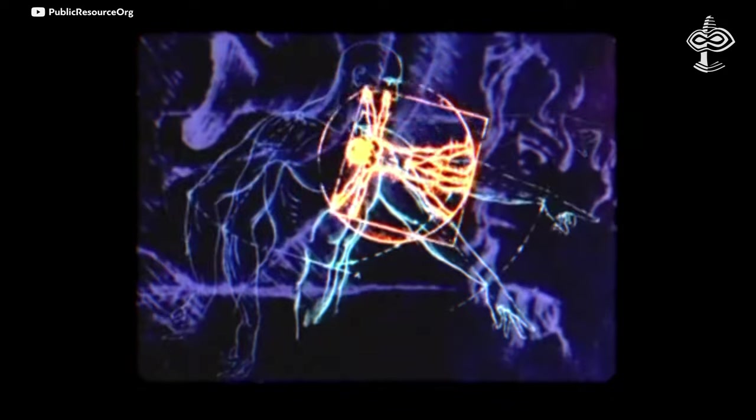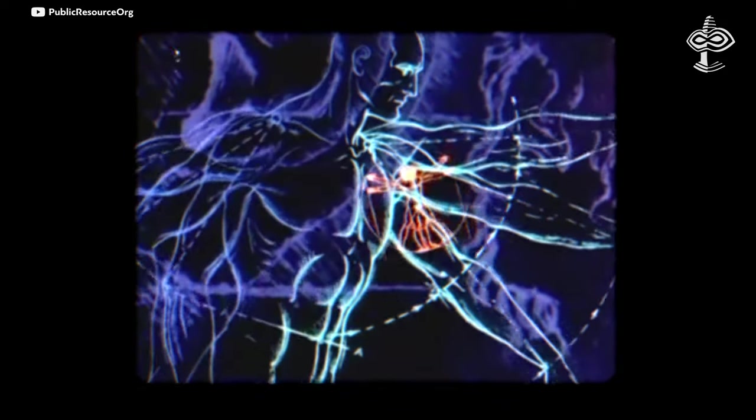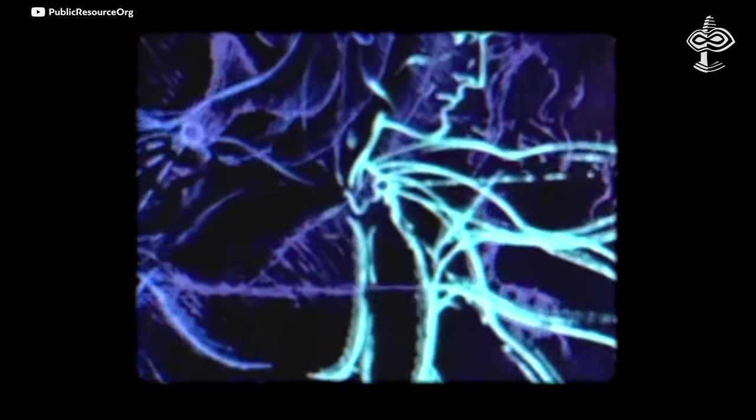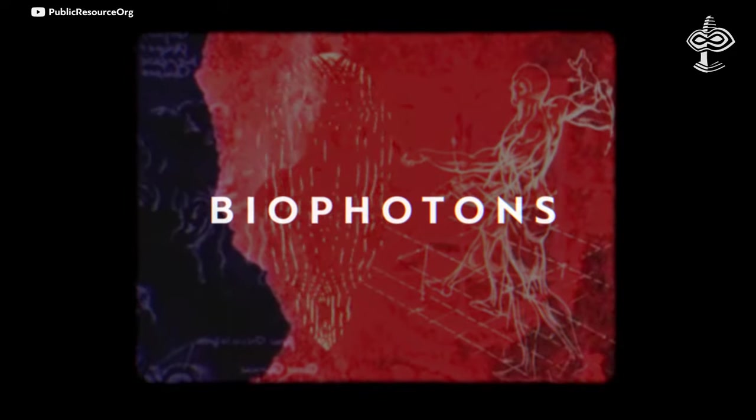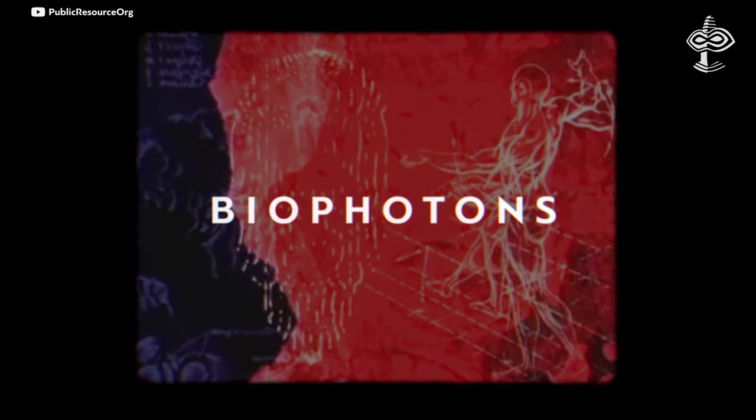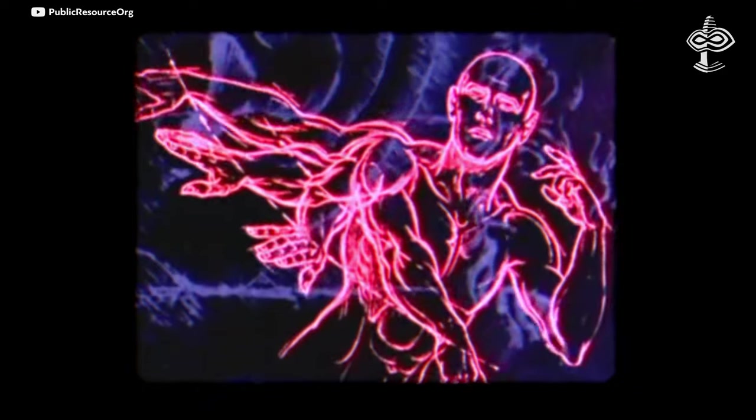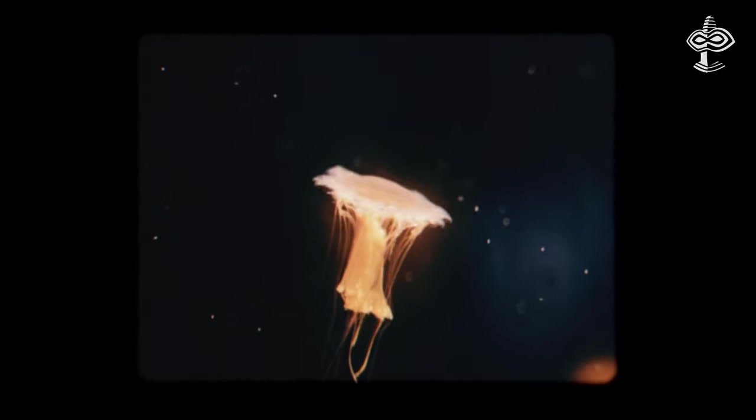All living things, including humans, emit a type of light that is not easily detectable. This light is called biophotons, which are particles of light known as photons spontaneously emitted by living tissues.